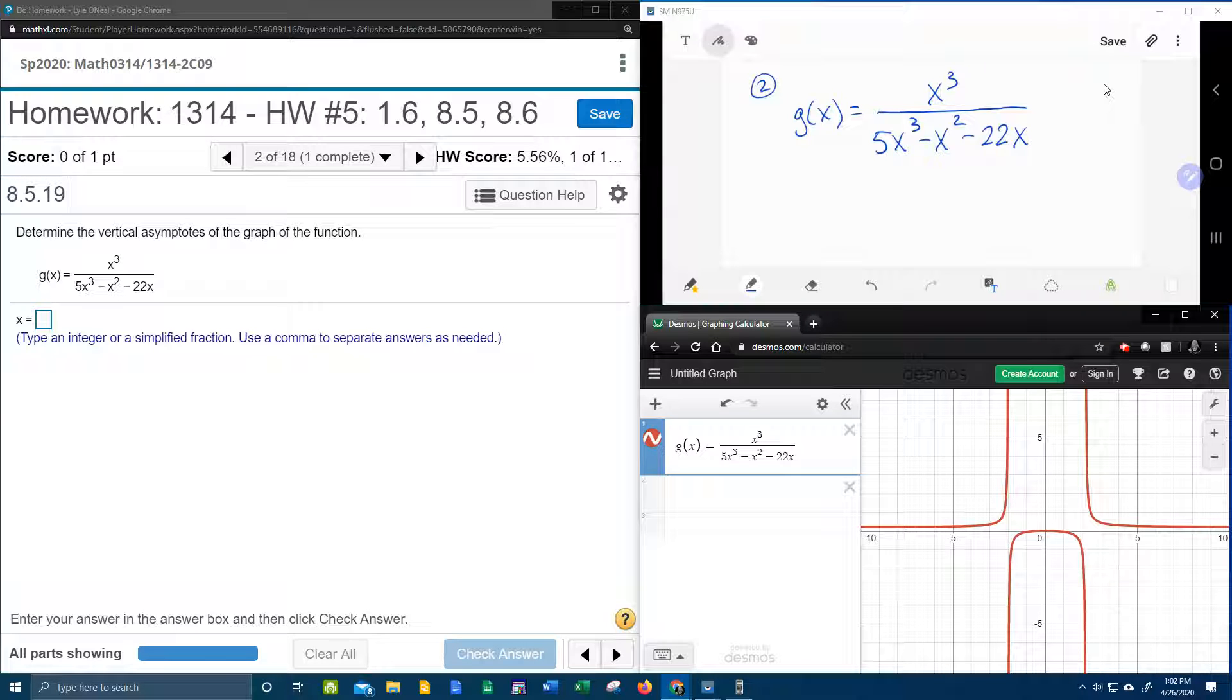Now, what I would like you to understand first is that the denominator cannot be zero. So when you're finding vertical asymptotes, it's kind of like finding the restrictions of the rational function.